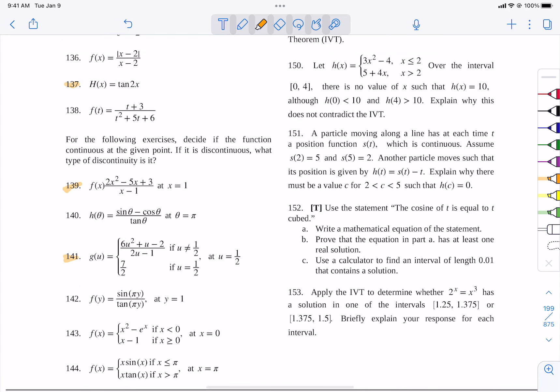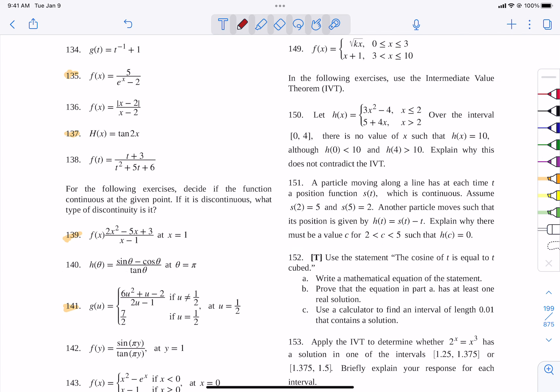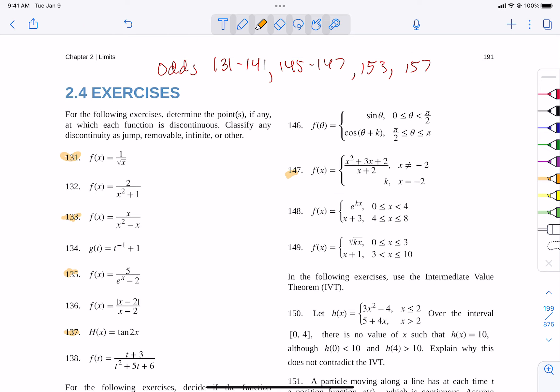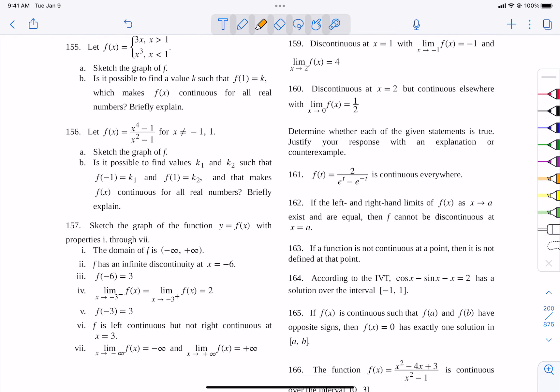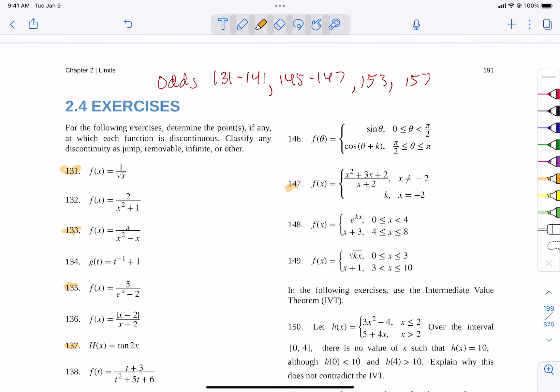And then 145 and 147, those are ones we had done where, remember the example that we did yesterday that was like, what's the C value that would make this thing continuous? And then 153 is like the example we had done with that sine function, looking at where it has a solution. And then 157 is to draw a graph that has all those properties. So I did try to do an example like each of those. So there you go. There's 2.4.